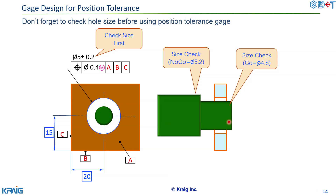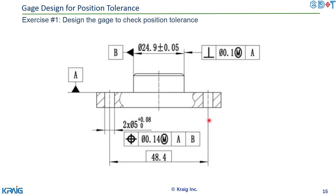One important note before using the gauge: always check the hole size first. If the hole size is out of tolerance, you are not allowed to use the gauge to check the position. Use a go/no-go gauge to check the size first — the go end (4.8) should push inside the hole, and the no-go end (5.2) should stop. Check size first, then use the position gauge.